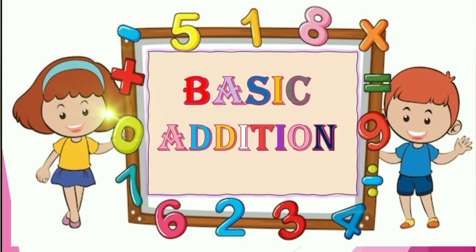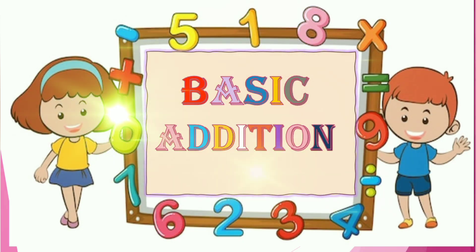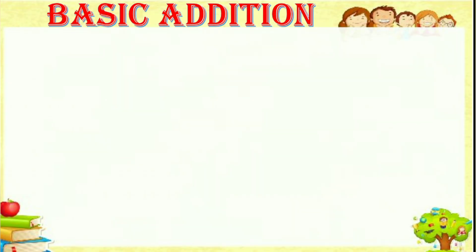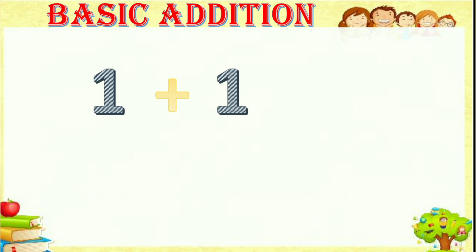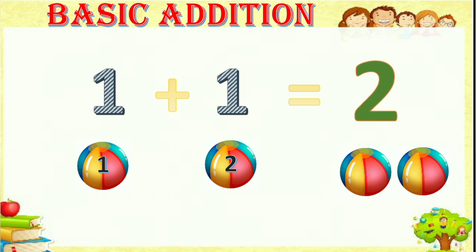Hi kids, today our topic is basic addition. This is the addition symbol. Using this we have to add — single digit addition easily. The first one is one plus one equals. For one there is one ball and for another one there is one ball, so totally one, two — there are two balls.